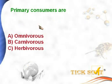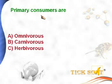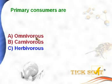Primary consumers are — options: (a) omnivorous, (b) carnivorous, (c) herbivorous. Primary consumers are definitely herbivorous — they feed only on plants. Omnivorous means feeding on both plants and animals; carnivorous means feeding only on animals. Primary consumers are always herbivorous, so option C is the answer.